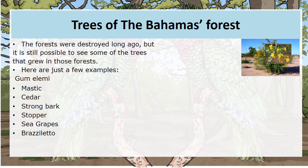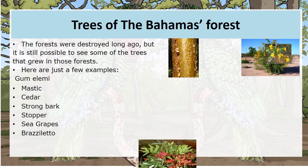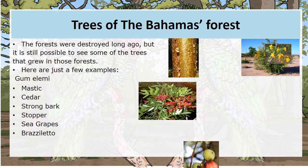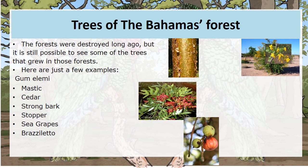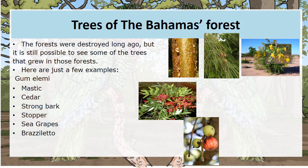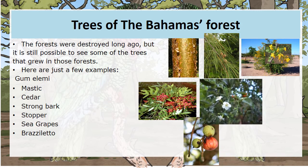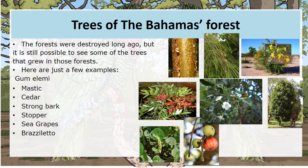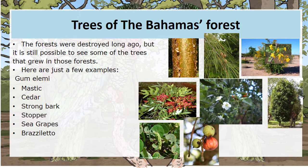Let's learn about some of the trees of the Bahamas' forests. The forests were destroyed long ago, but it's still possible to see some of the trees that grew in those forests. Here are just a few examples: the Gamalami, the Mystic, the Cedar, the Strongbark, the Stopper, the Sea Grape, and the Brazzolito.